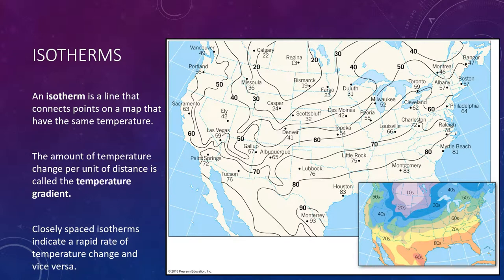To examine the distribution of air temperatures over large areas, isotherms are commonly used. An isotherm is a line that connects points on a map that have the same temperature. Note that 'iso' means equal and 'therm' means temperature. Therefore, all points through which an isotherm passes have identical temperatures for that time period indicated. Generally, isotherms representing 5-degree or 10-degree temperature differences are used, but any interval may be chosen.